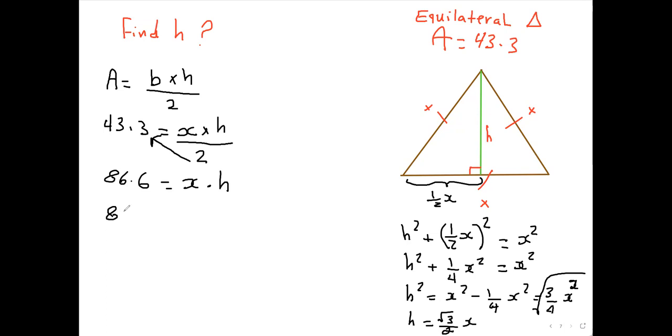We could go back to this equation right here, and we go 86.6 equals x times root 3 over 2 x, and therefore, 86.6 equals root 3 over 2 x squared. To get rid of the root 3 over 2 here, we multiply the 2 into here, and this is over 1, and we multiply the root 3 to the 1, so we'll end up with 86.6 times 2 over root 3, and that equals x squared.